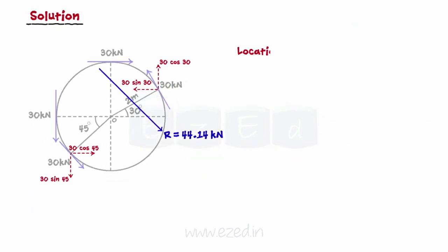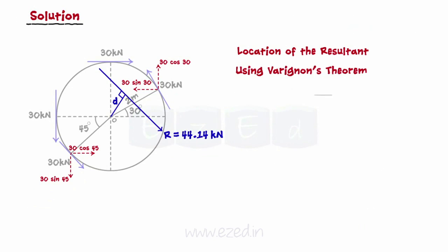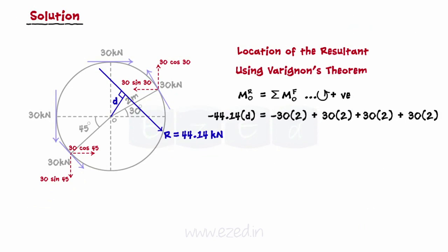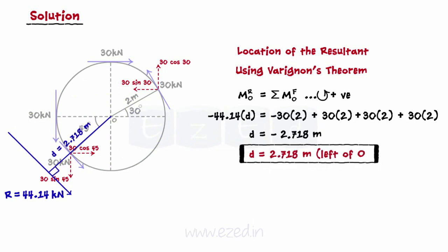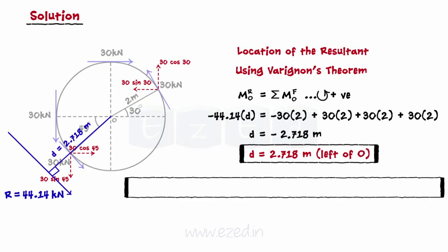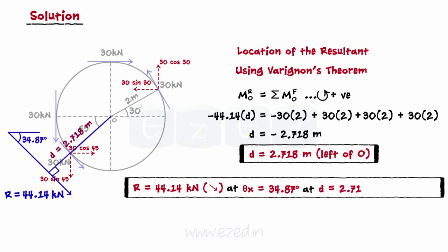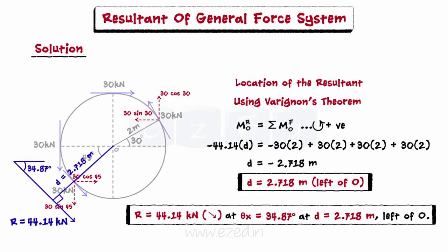Now we have to find the exact location of the resultant from the center of the circle. For that purpose, we will use Varagnon's theorem. On substituting the values and then simplifying, we find that the resultant acts a distance of 2.718 meters to the left of O. Thus, we have calculated the resultant to be equal to 44.14 kN at an inclination of 34.87 degrees, located at a perpendicular distance of 2.718 meters to the left of O.